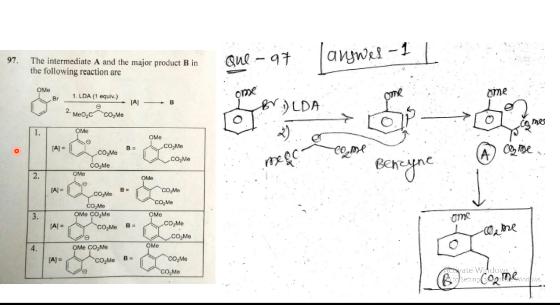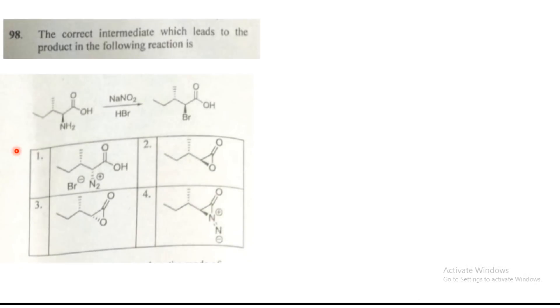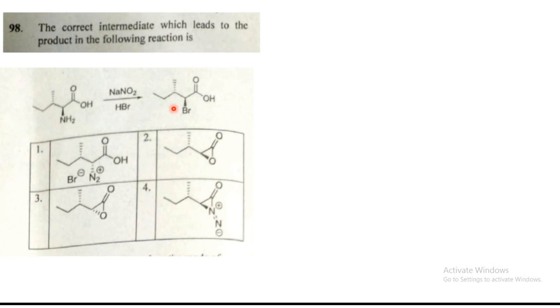And you can see in the first answer, this is correct. The first answer should be the correct where ester will be migrated on that carbon to negative charge on aromatic ring. Okay, now you can see next question, 98, where they asked what is the intermediate? This reaction is known as diazotization reaction.